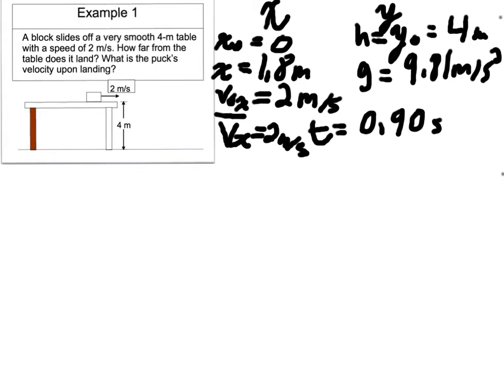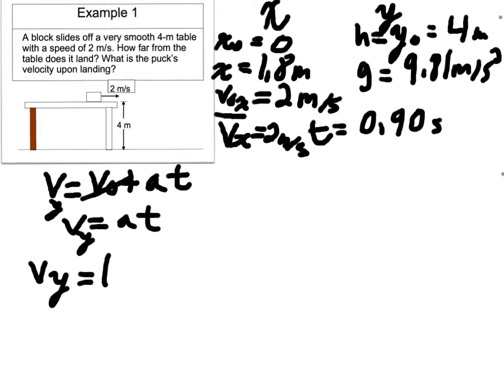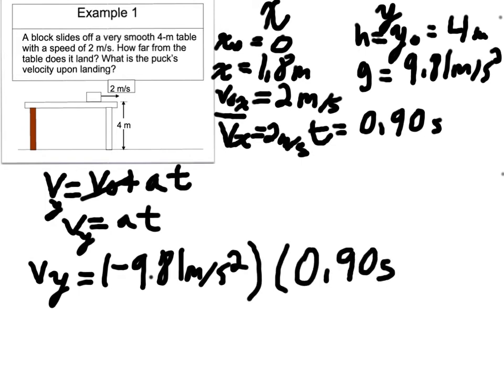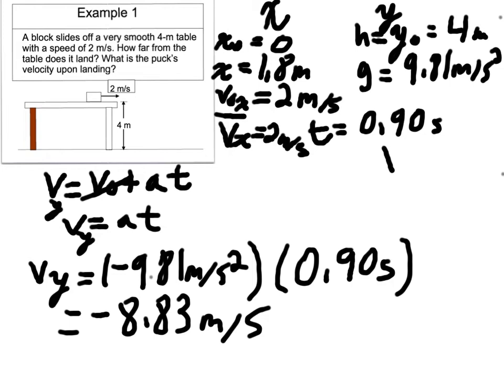so why don't we use the time in that simple equation v equals v naught plus a t. v naught is 0, the puck sits on the table, so v equals a t, this is for y. v y equals negative 9.81 meters per second squared times 0.90 seconds. Okay so now we solve that out and when I use those numbers I get negative 8.83 meters per second so now we have a final velocity in y, negative 8.83 meters per second.